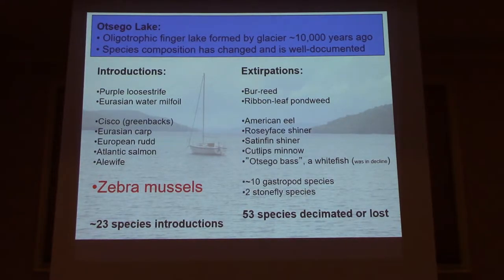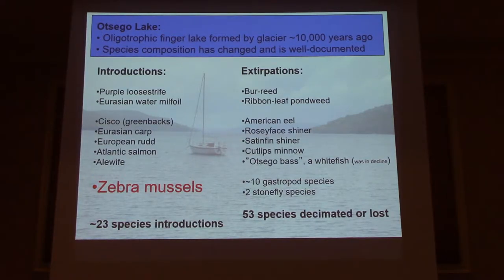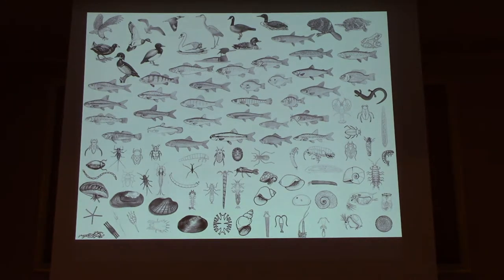Otsego Lake is a relatively well-studied lake. I arrived there in 2008 as a fish parasitologist and found there's a lot of good information about the history of the lake in terms of the flora and fauna, species that have been introduced prominently such as the zebra mussel, and also species that are in decline or extirpated from the lake.